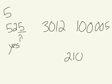We look at 3,012 — the last digit is 2. Is 2 a 0 or a 5? No, it's not. Therefore, 3,012 is not divisible by 5. For 100,005, we look at the last digit, which is 5. Is it a 0 or a 5? Yes, it is. Therefore, 100,005 is divisible by 5. The last one, 210 — the last digit is 0. Is it a 0 or a 5? Yes, it is. Therefore, 210 is evenly divisible by 5.